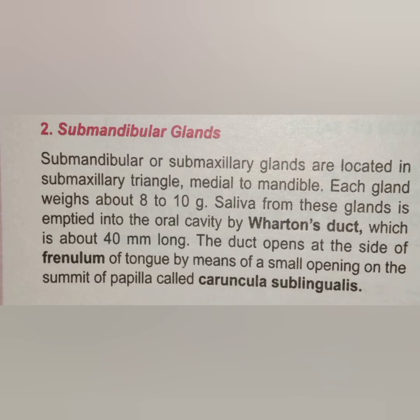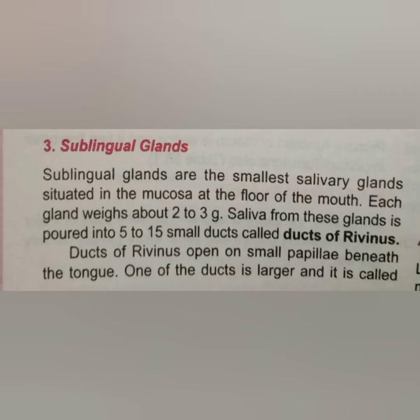The third gland is the sublingual gland. Sublingual glands are the smallest salivary glands, situated in the mucosa at the floor of the mouth, weighing 2 to 3 grams. Saliva is produced and put into the duct of Rivinus through 5 to 15 small ducts. These ducts connect together and put saliva secretion into the mouth. The duct of Rivinus opens on the small papillae beneath the tongue. The sublingual gland especially works for the digestive mechanism.